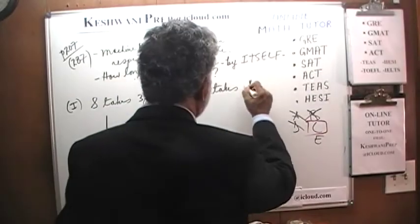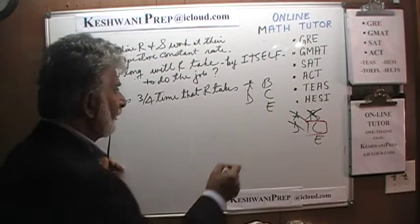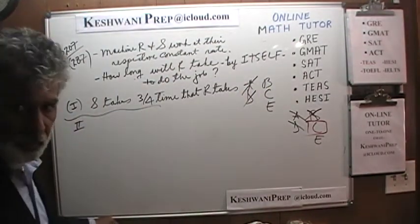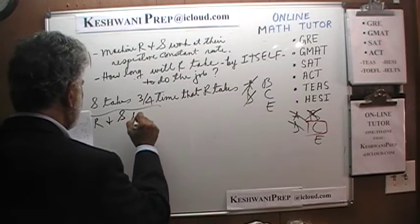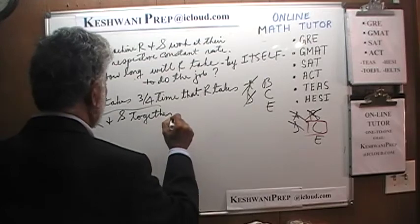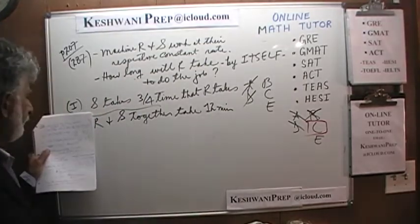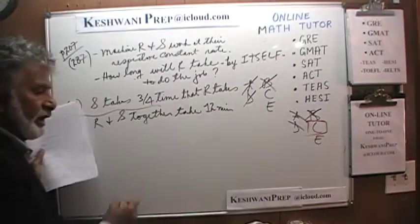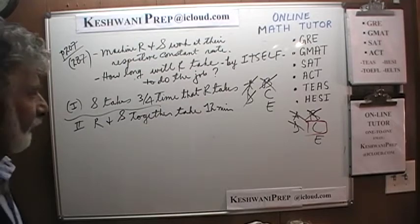The first statement by itself is not enough, so the answer cannot be A or D. The second statement tells us that R and S together take 12 minutes. By itself that's also not enough, so the answer cannot be B. But if we put them together — we know how long they take together and we know the speed of one relative to the other — we can figure out R alone. The answer is C.